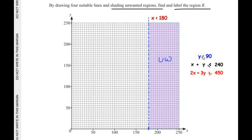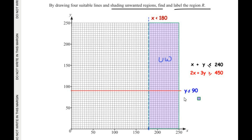For the second inequality, y ≤ 90: we locate y = 90 on the y-axis, which is two blocks below 100. We draw a solid horizontal line at y = 90 — solid because the sign is less than or equal to. We label it y = 90. The region above this line is unwanted, so we shade that entire area.